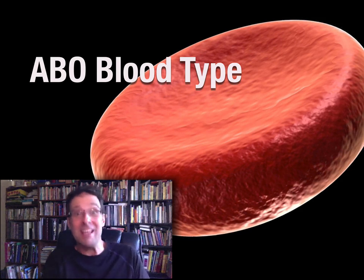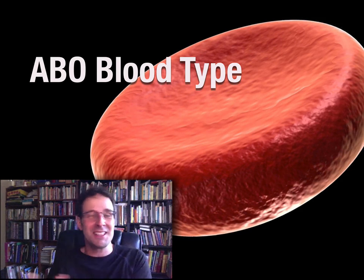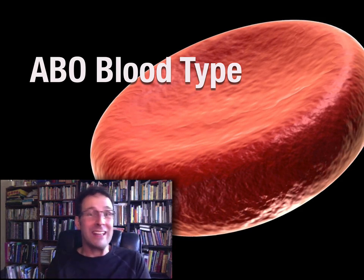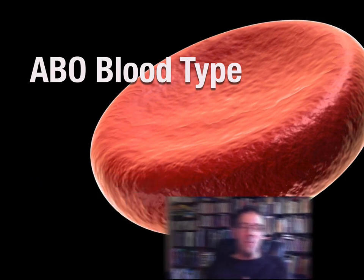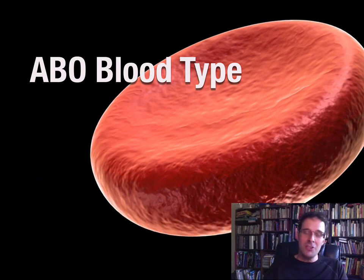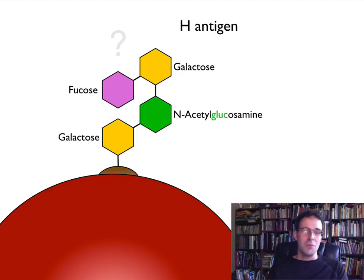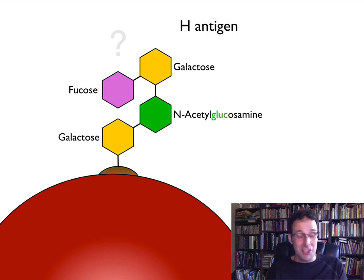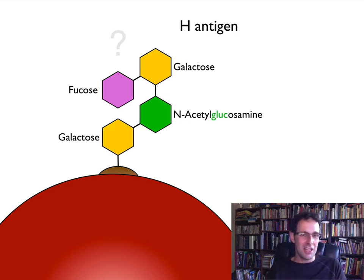But if you do it the other way around — if you give A-type blood to somebody who has O-type blood — you can kill them. Why is that? Well, in order to answer that question, we really need to understand what antigens are, and in particular, this antigen: the H-antigen.